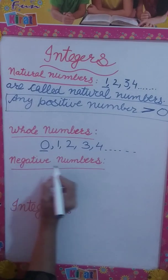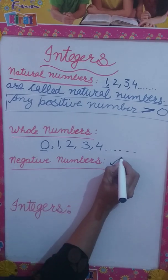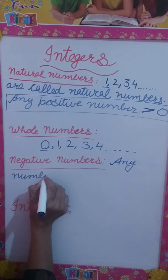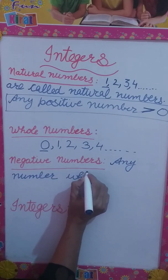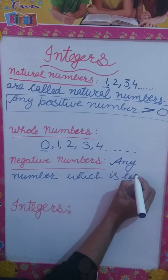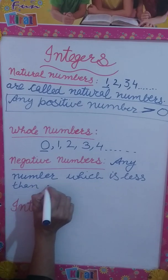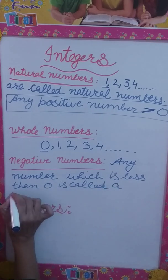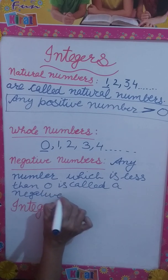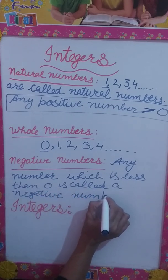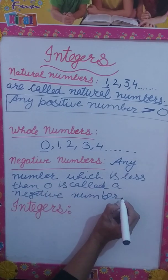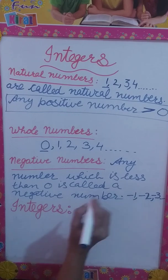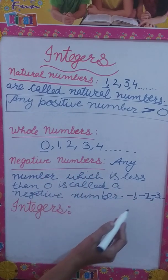Then comes negative numbers. Any number which is less than 0 is called a negative number. It is shown with a negative sign like this: minus 1, minus 2, minus 3 and so on. These are called negative numbers.